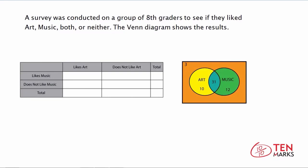Let's try another problem. A survey was conducted on a group of 8th graders to see if they liked art, music, both, or neither. The Venn diagram shows the results. The yellow section represents students who like art only. The green section represents students who like music only. The blue overlapping area shows the number 31, representing students who like both art and music. The orange area outside all circles shows 3 students who do not like art nor music.